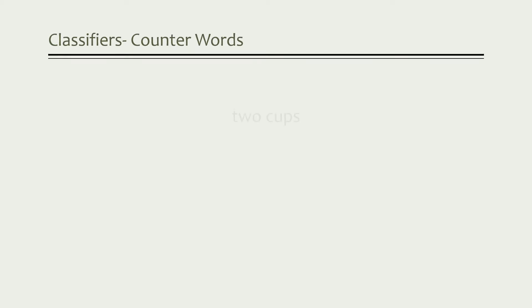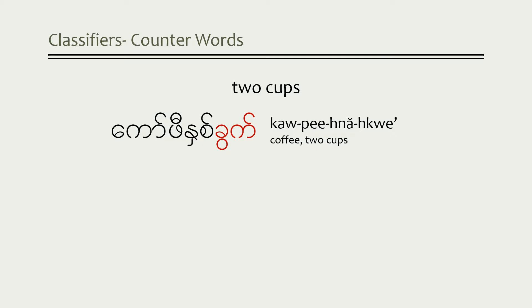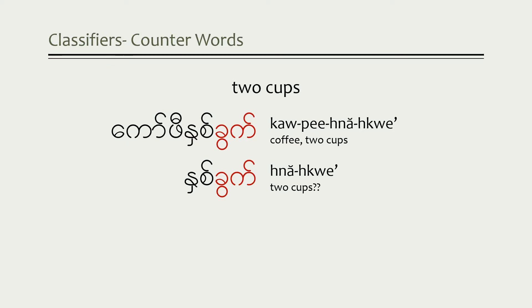We're going to change this up a little bit. Let's say that you wanted to say 'two cups' — not two cups of coffee, just two cups, as in 'please get two cups from the cabinet'. Before, we said two cups of coffee is 'copy ne quet', and the word used for cup was 'quet'. So if we want to say two cups, would we just say 'ne quet'? Actually, no. You're going to use a different counter word for cups, and the word is 'long'.